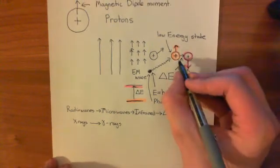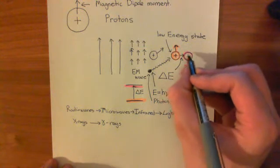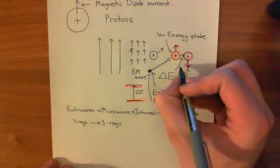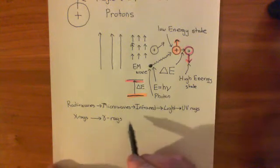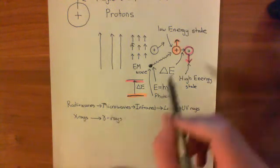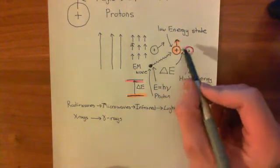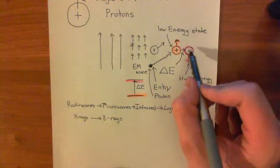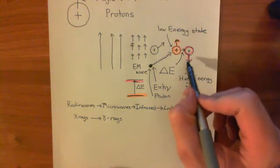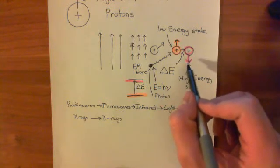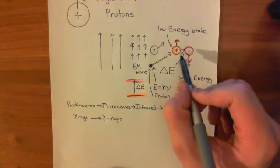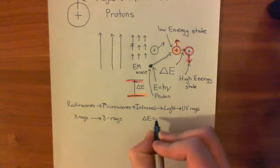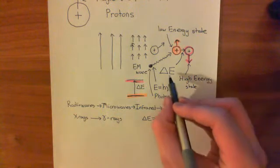This proton cannot move to the higher energy state unless the energy difference provided by the photon is exactly the right amount of energy. You might ask why it can't work if you give it higher frequency radiation — more energy than it needs. But to make the proton disalign with the external magnetic field, you have to give it the exact right amount of energy. There is an exact frequency of radiation you have to fire at this proton.